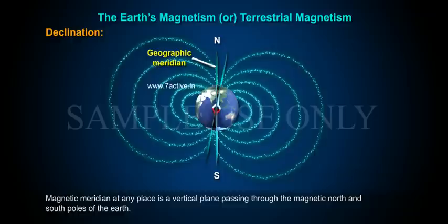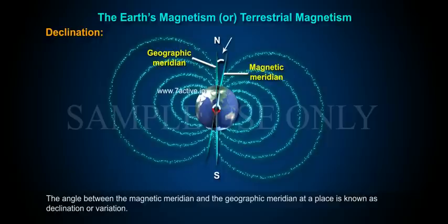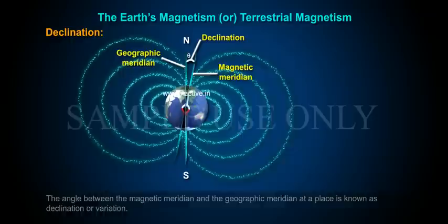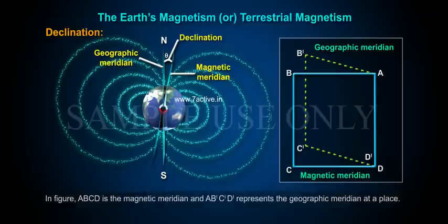Magnetic meridian at any place is a vertical plane passing through the magnetic north and south poles of the Earth. The angle between the magnetic meridian and the geographic meridian at a place is known as declination or variation. In figure, ABCD is the magnetic meridian and AB'C'D' represents the geographic meridian at a place.